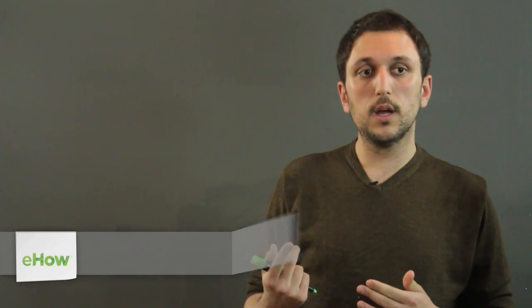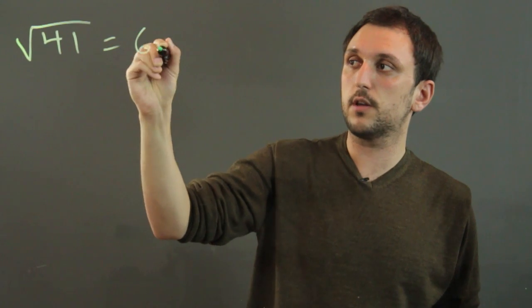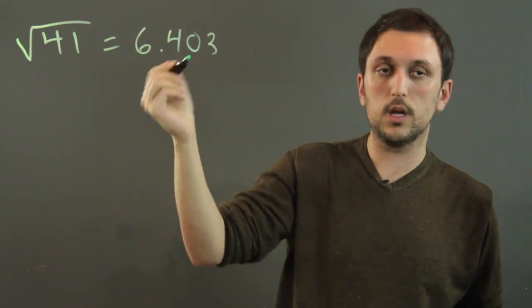When you're taking the square root of a number, it's the opposite of squaring where you multiply a number by itself. So the square root of 41 equals 6.403 roughly.